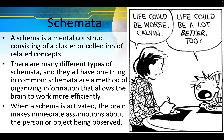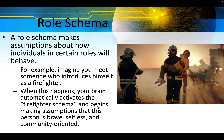When a schema is activated, the brain makes immediate assumptions about the person or object being observed. A role schema makes assumptions about how individuals in certain roles will behave. For example, imagine you meet someone who introduces himself as a firefighter — your brain automatically activates the firefighter schema and begins making assumptions that this person is brave, selfless, and community oriented.